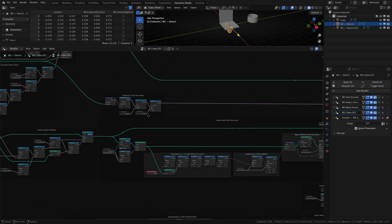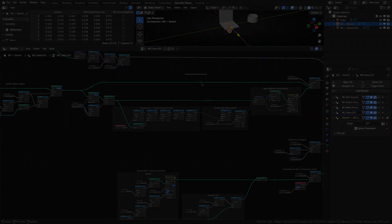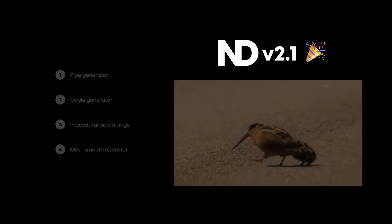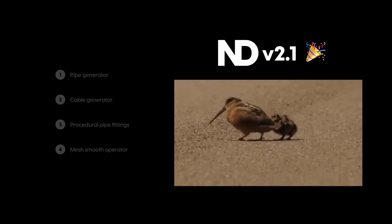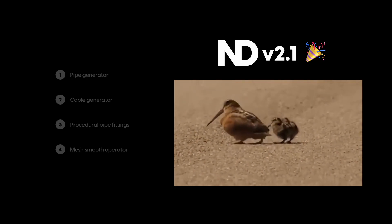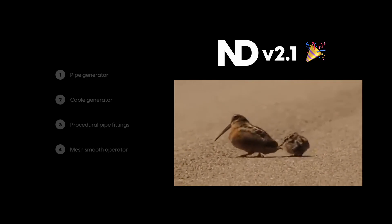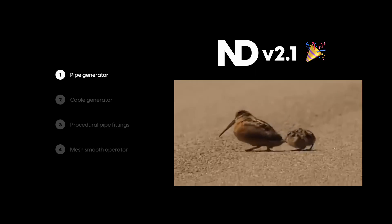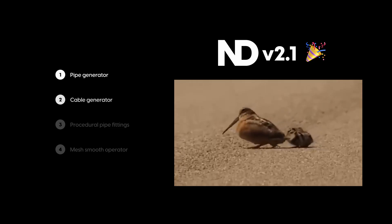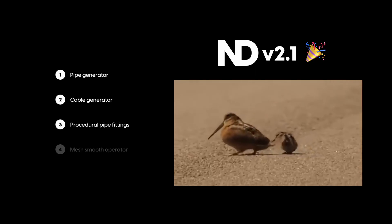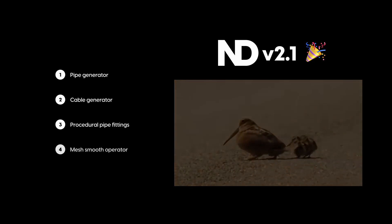We're still riding the express train to Noodletown. ND 2.1 has come around quickly with a bunch of new goodies. In this update you get a pipe generator, a cable generator, procedural pipe fittings, and a new smooth operator.